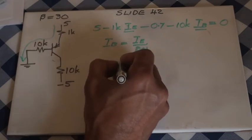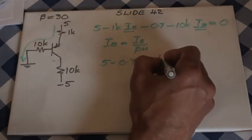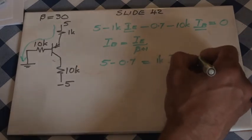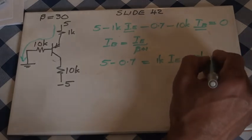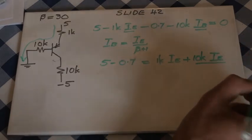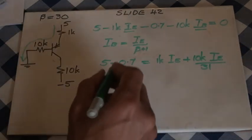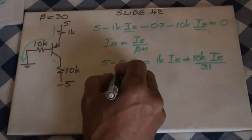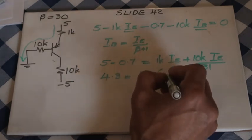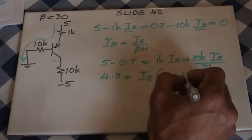5 minus 0.7 equals 1k emitter current plus 10k IB. IB we are going to replace with IE divided by beta plus 1. In this case, beta is 30, so 31. That means 4.3 equals IE times common factor 1k plus 10k over 31.